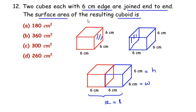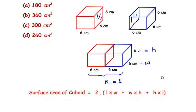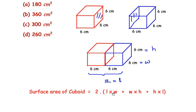Now let us write down the formula for surface area of a cuboid. The formula is: surface area of cuboid equals 2 times (length times width plus width times height plus height times length).